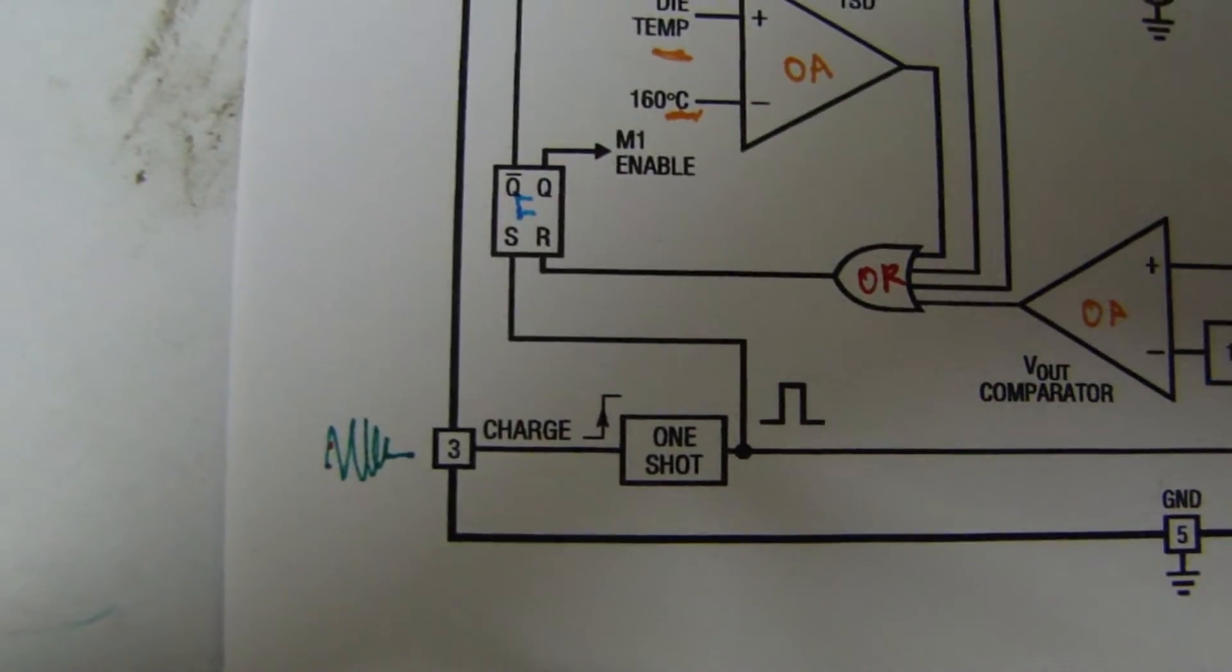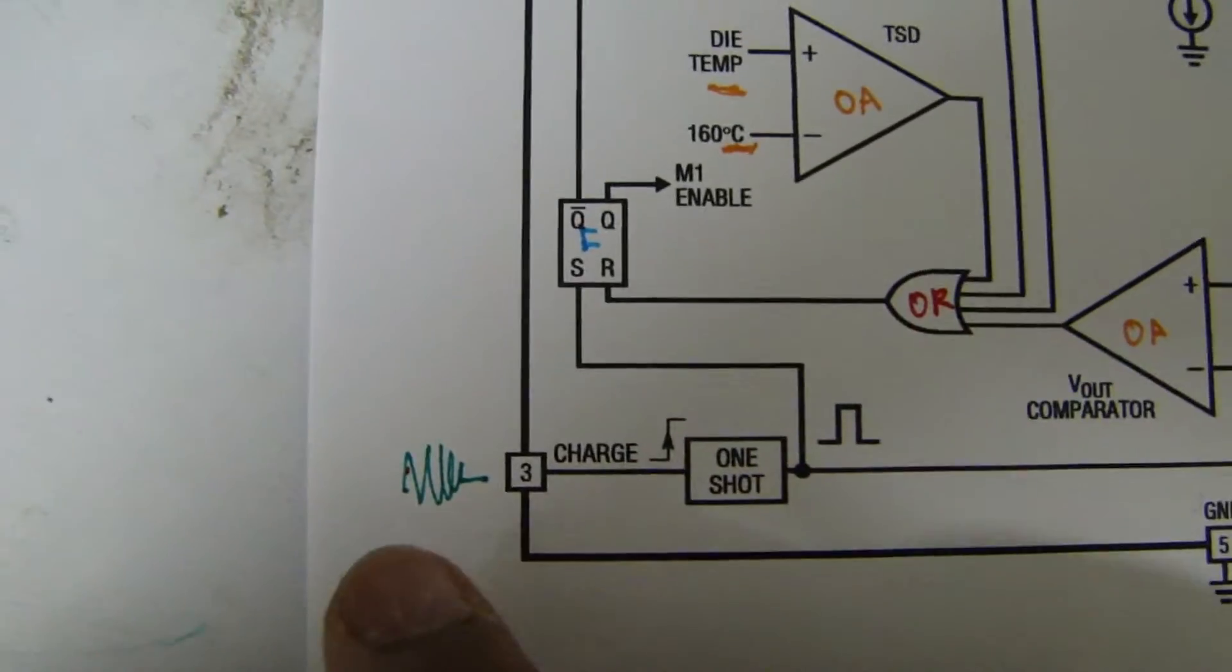Now this input, the charge input. If you put a small signal here, the one-shot turns it into a regular pulse and turns on charging through this flip-flop.